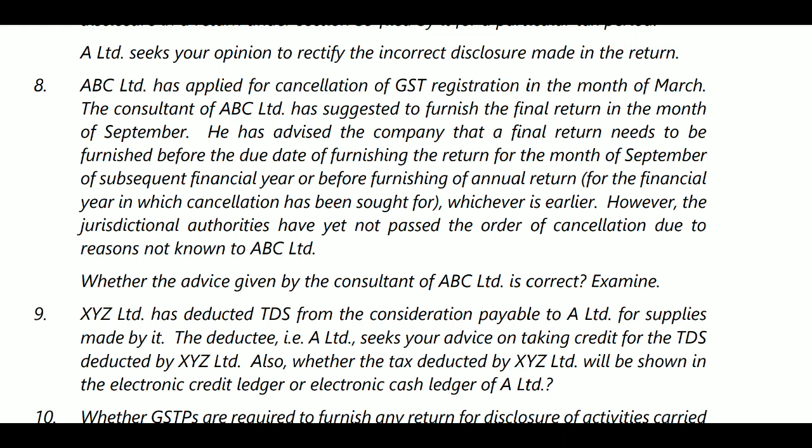Question number eight: ABC Limited has applied for cancellation of GST registration in the month of March. The consultant of ABC Limited suggested furnishing the final return in the month of September. The consultant has advised the company that the final return needs to be furnished before the due date of filing of the return for the month of September of the subsequent financial year or before that, whichever is earlier. However, the judicial authorities have yet not passed the order of cancellation due to reasons not known to ABC Limited.